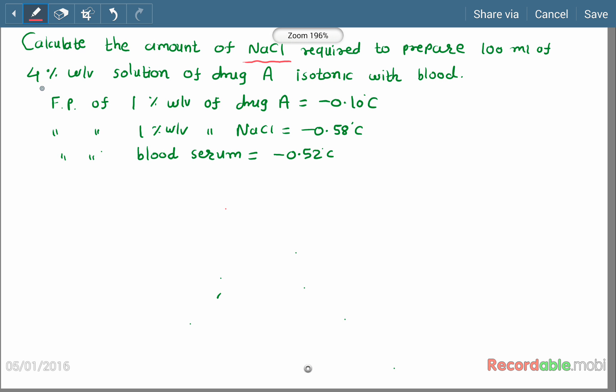So the total freezing point would be 0.10°C minus 0.10 multiplied by 4, which is equal to minus 0.40°C for 4% weight by volume.